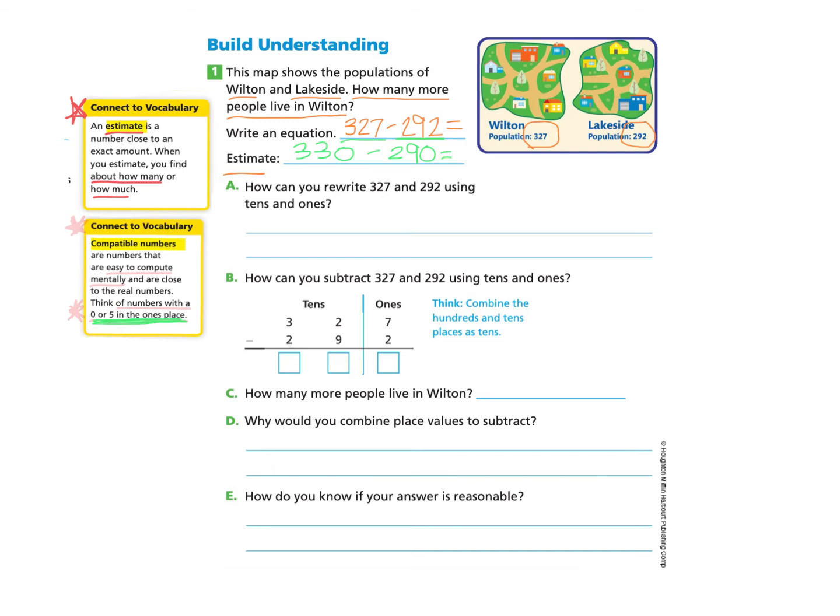Having zeros and fives in the ones place helps me compute the numbers easily. So they're more compatible. If you would like to pause now and complete the estimation of 330 take away 290, you can do that. And you will find that the answer is 40.